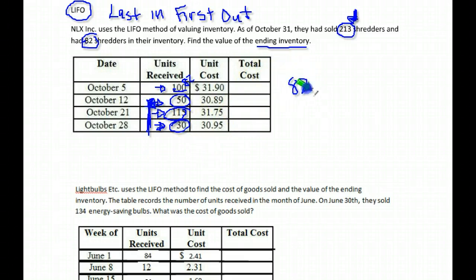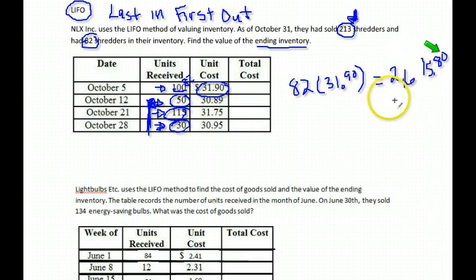So we know we had 82 items. We know they had to come out of this portion where they were $31.90 each. So we can find the price of those 82 that we have left over. And we get $2,615.80. So again, go from the top. You sell from the top and go up. Our 82 had to come out of these 100. That's our leftovers. And we multiplied by their price, got the total.